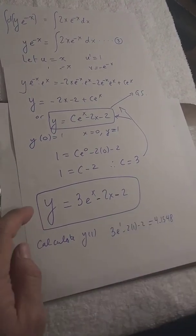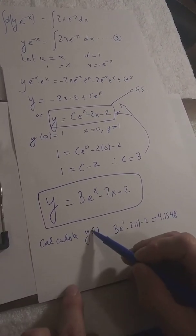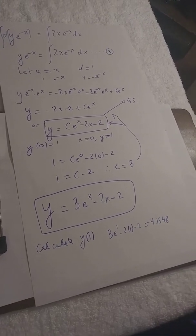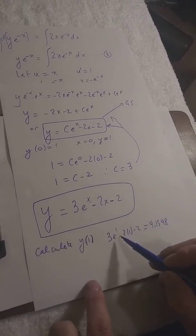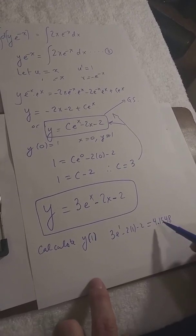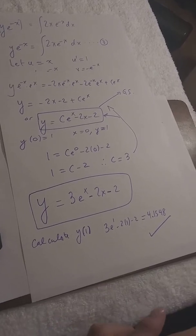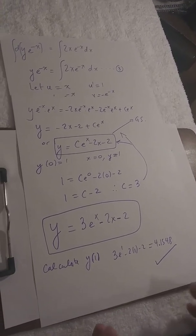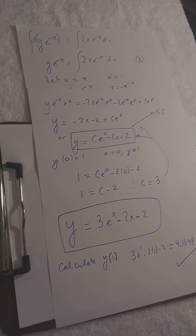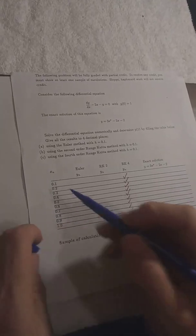I picked this example on purpose because we can check and compare the two solutions. They want us to calculate y of 1: substitute x=1, giving 3e^1 − 2(1) − 2, which equals 4.1548. This is just like what Runge-Kutta gave us — it's not always in this much agreement, but in this case it is. To recap the Runge-Kutta method: given an initial x and y, use both to calculate the next y, then use that x and y to calculate the next, and keep going until you reach whatever you're looking for.